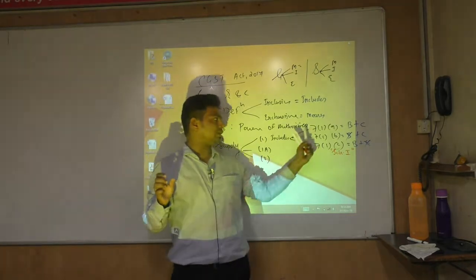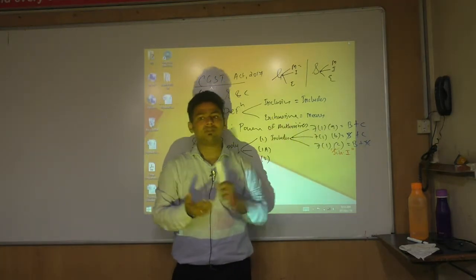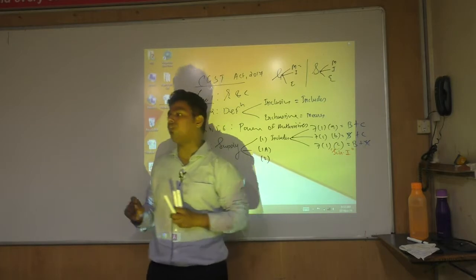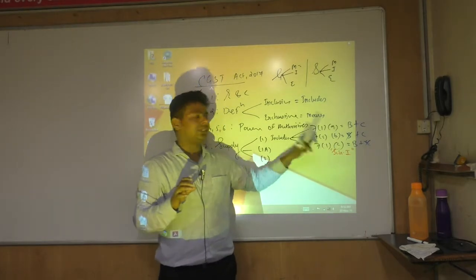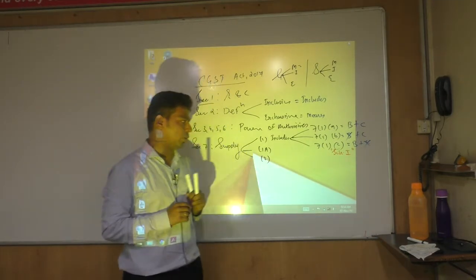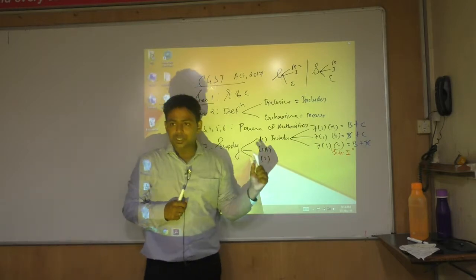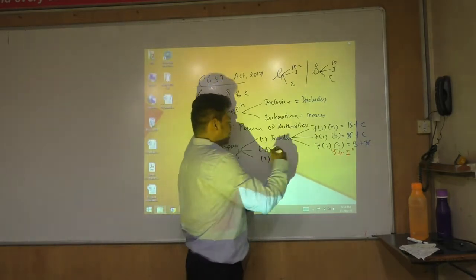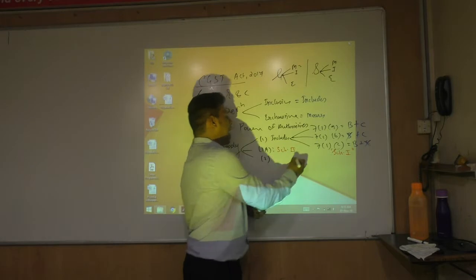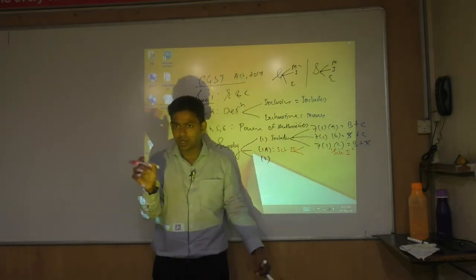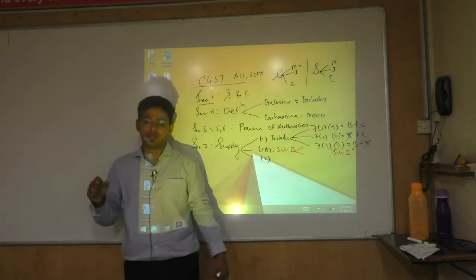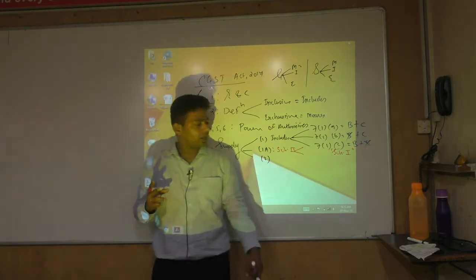To summarise: to become a supply, an activity must satisfy either 7.1a, 7.1b, or 7.1c. Section 7.1a is the core — business plus consideration. Section 7.1b deals with importation of service. Section 7.1c deals with supply without consideration — only 4 activities listed in Schedule 1. Section 7.1a also references Schedule 2, which clarifies which activities are to be treated as supply of goods or supply of service when there is confusion.